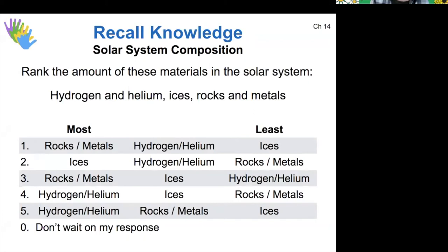But first, recall which of these orderings is the correct one for going from most material in the solar system to least. All right. So we know that the vast majority of the material in our solar system is hydrogen and helium. So we should be somewhere between four and five. And it turns out that rocks and metals are the least abundant type of material, even though that's primarily what our own planet is made of.